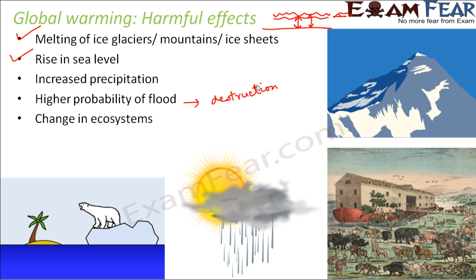Another harmful effect is change in ecosystems. An ecosystem is an area — such as a forest, pond, lake, or desert — where living and non-living organisms live together and interact with each other to survive. Several ecosystems will get spoiled due to floods, melting glaciers, or too much rainfall and snowfall. These are some of the major harmful effects of global warming.